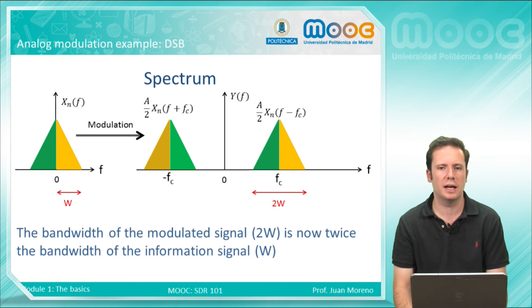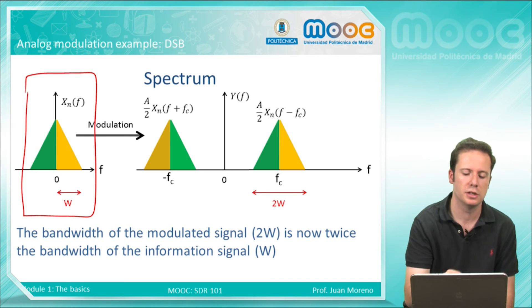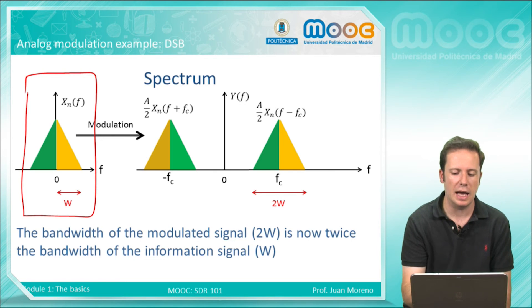If we look at the spectrum of the signal, we can see that this is the information signal and when we modulate it, what we do is to go from the baseband to a band that does not contain this DC component.